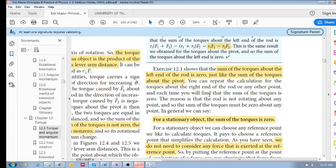It says you can repeat the calculation for the torques about the right end of the rod, or any other point, and each time you will find that the sum of the torques is zero. Any point that you calculate the sum of torques, you should get the same answer because there's no change in your angular momentum.